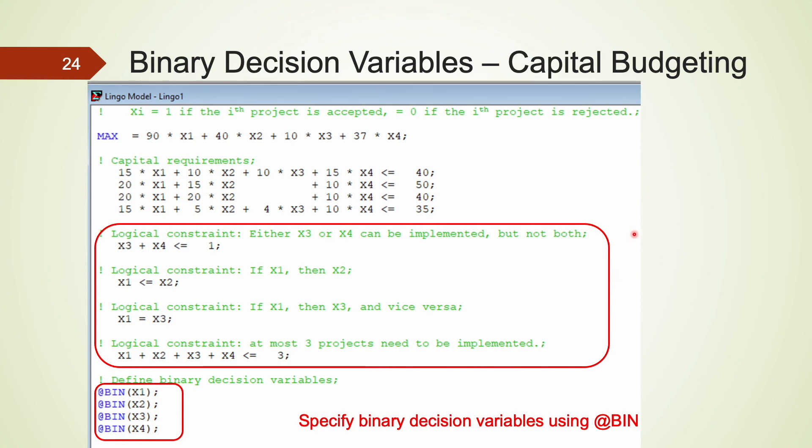Here is the final linear programming model that contains both the capital requirements constraints, and also the logical constraints. Because all of the x's are binary decision variables, not just any integer valued variables, we would have to specify them using @BIN function in LINGO. Be sure to end each line with semicolons as well.